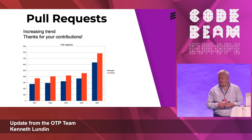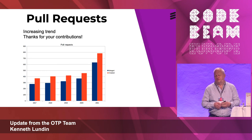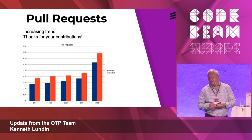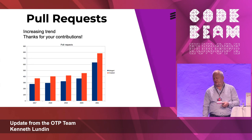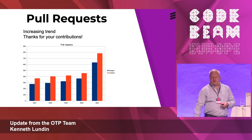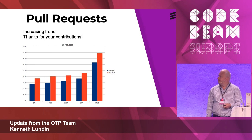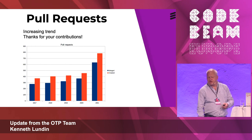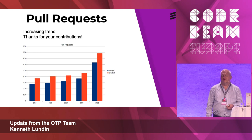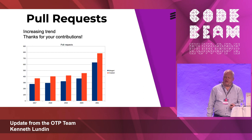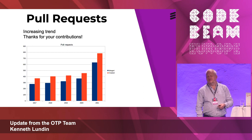I want to thank all contributors — we have an increasing trend of contributions. The number of created pull requests in 2021 was around 800, and it takes some effort for the OTP team to handle them. Some are tricky and some are just too much.